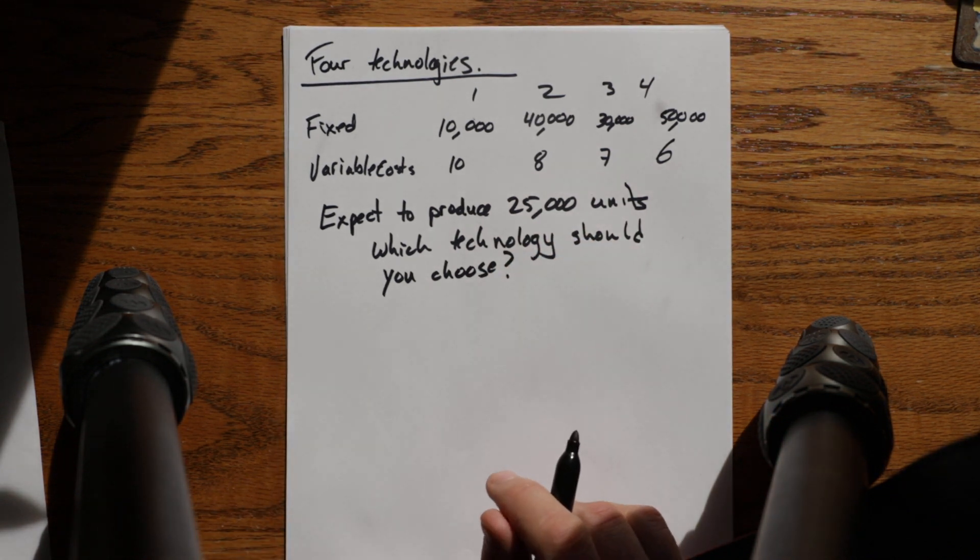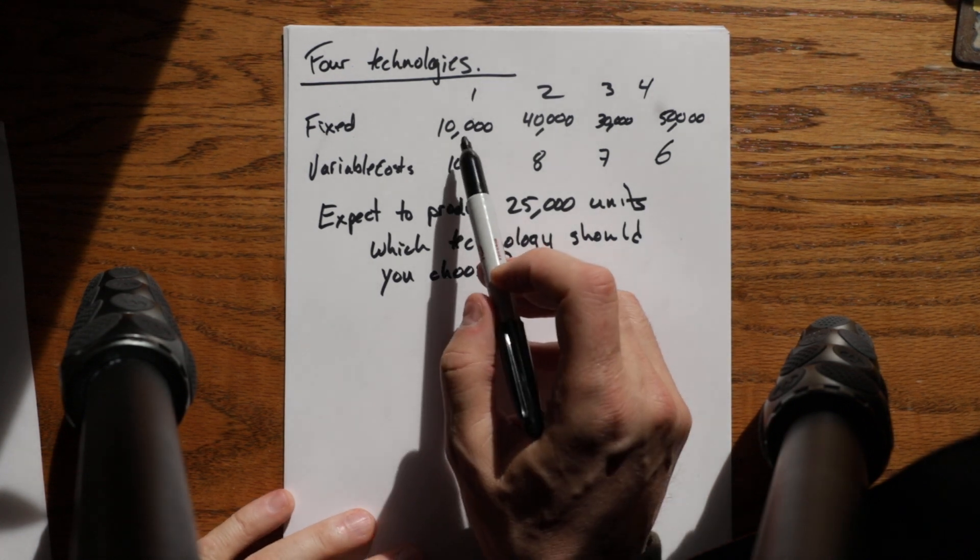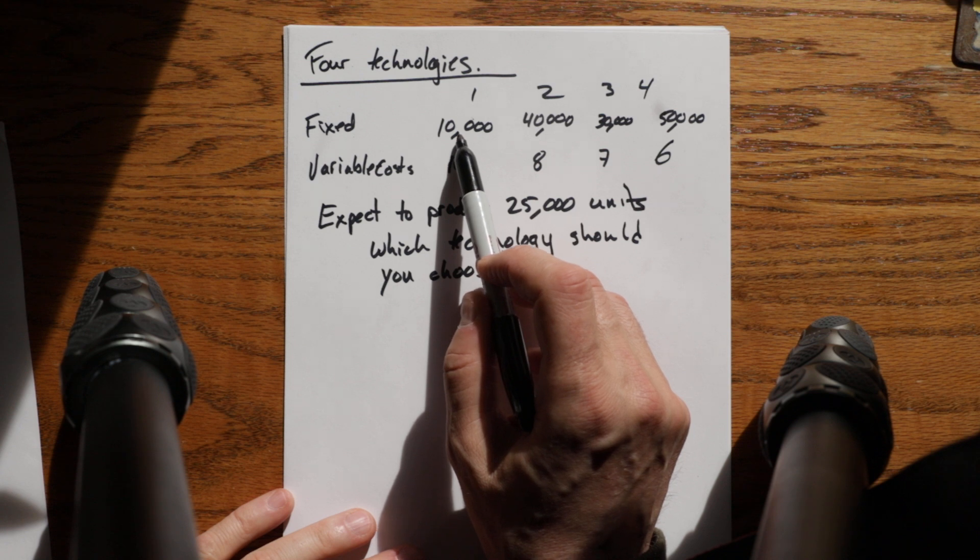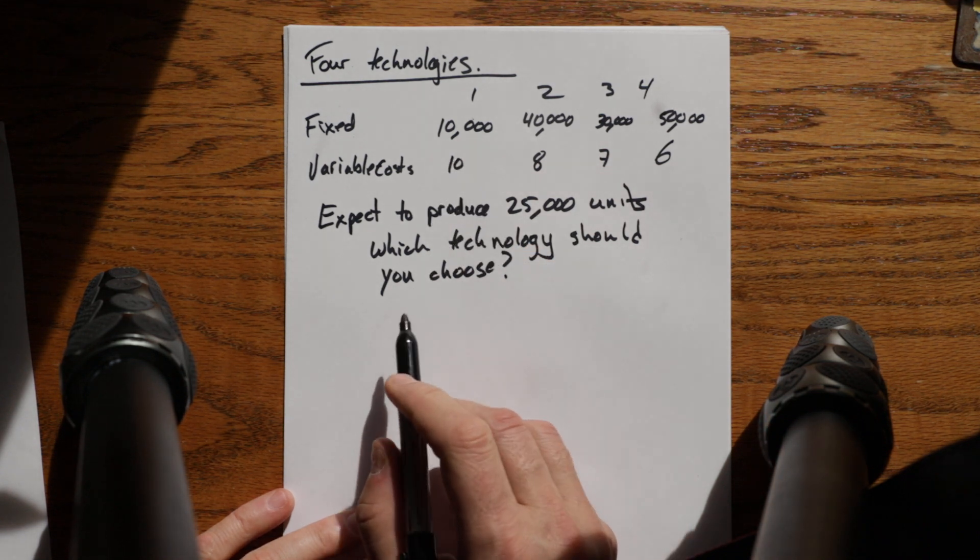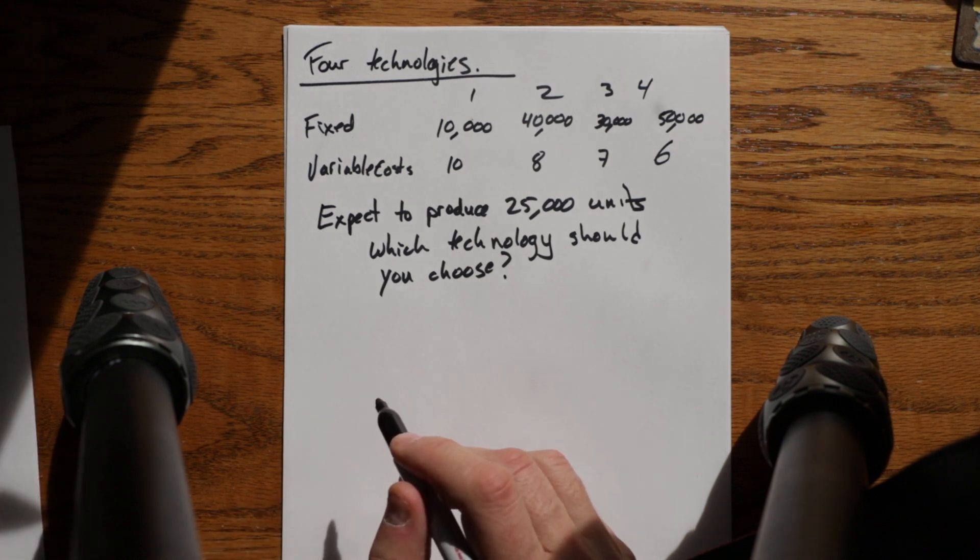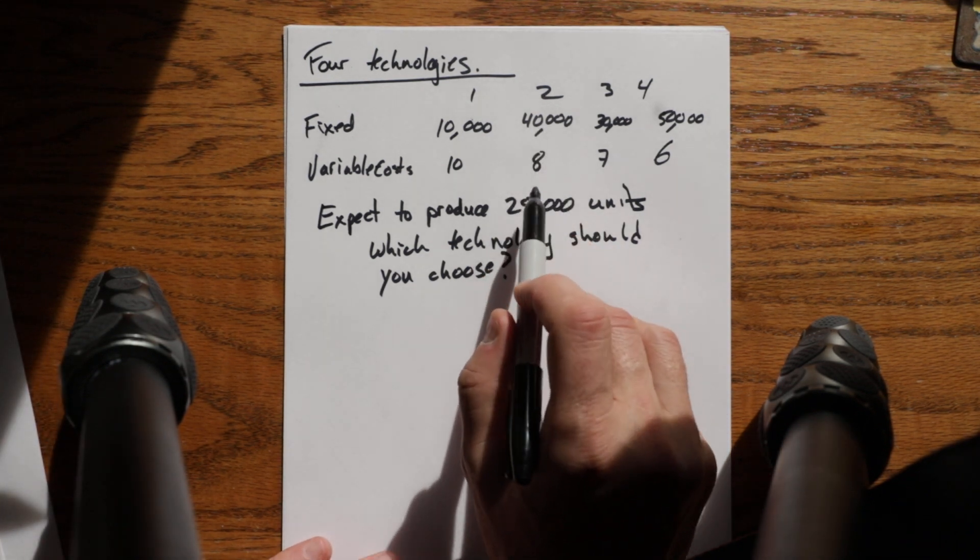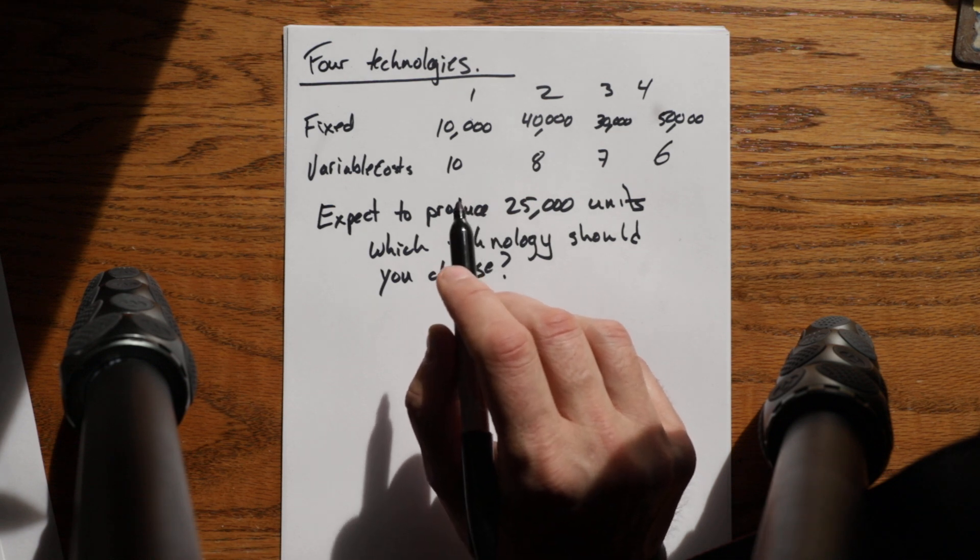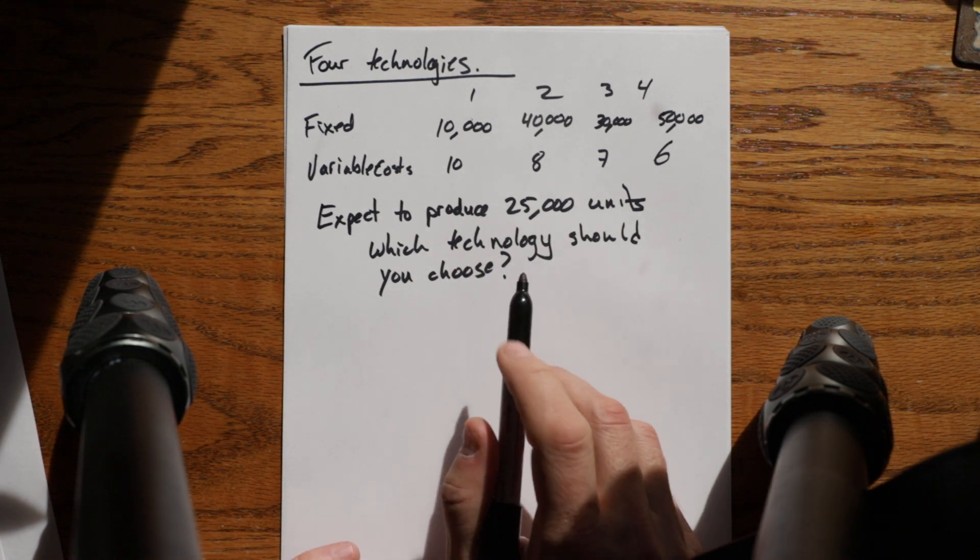Well, in this circumstance you know that technologies with lower fixed costs and higher variable costs will be cheaper at lower quantities, and ones with higher fixed costs and lower variable costs will be cheaper later because your per unit cost goes down as you spread that fixed cost over more units.